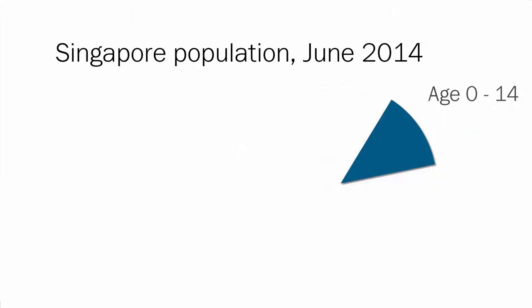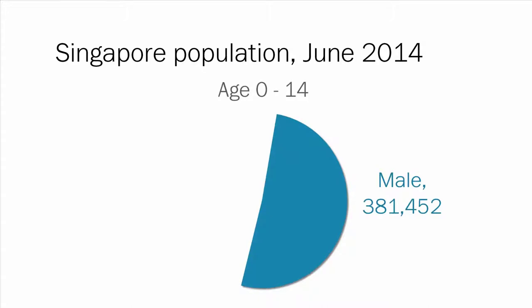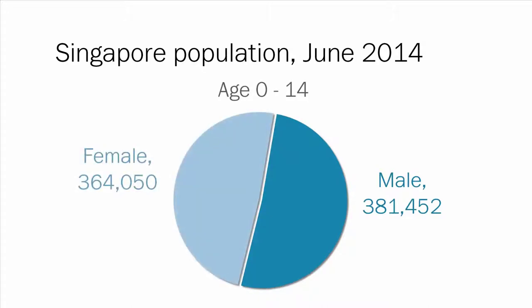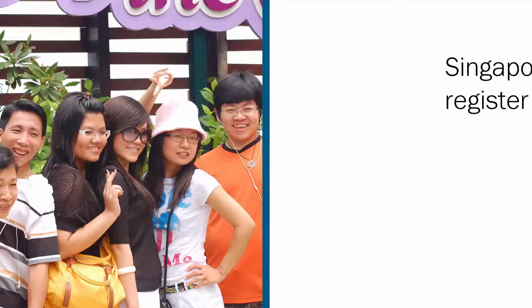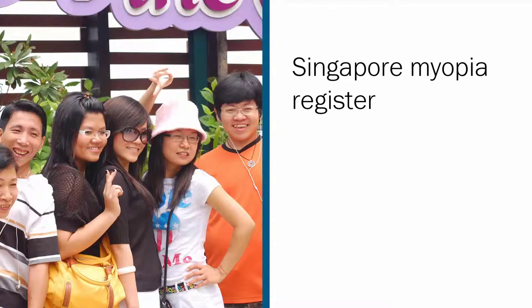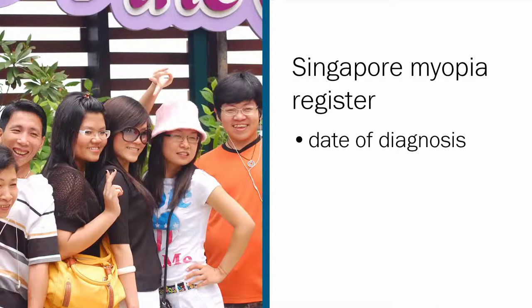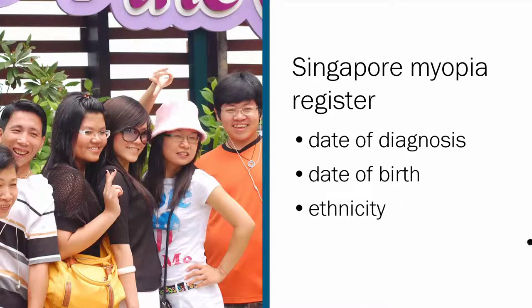Of these, 381,452 were male and 364,050 were female. In Singapore, 80% of adults have myopia. This could be due to the intensive education system. Since 1990 there has been a central register of myopic individuals, which gives the date of the initial diagnosis as well as demographic details such as date of birth, ethnicity and gender.